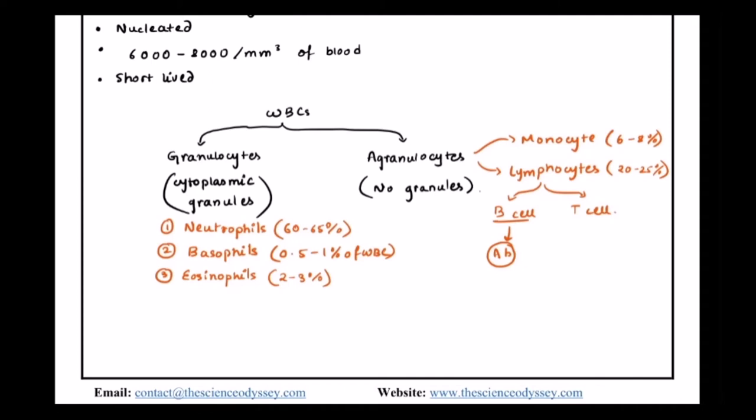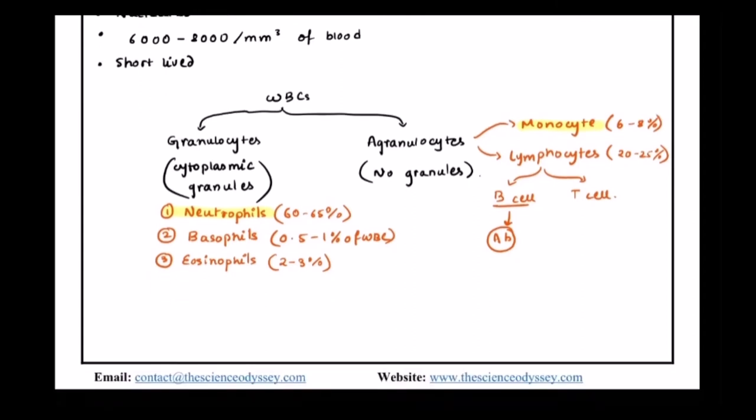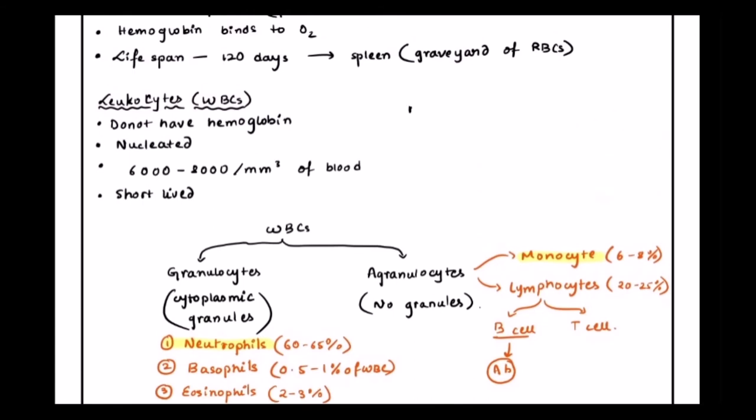If we now speak about some of the functions. Neutrophils and monocytes, they are phagocytic cells. They destroy foreign organisms that enter our body.